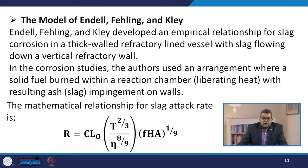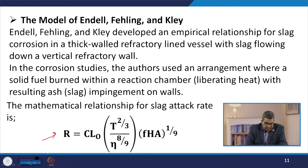Another model is that of Endel, Fehling and Klee, who developed an empirical relationship for slag corrosion in a thick-walled refractory lined vessel with slag flowing down a vertical refractory wall. In corrosion studies, the authors used an arrangement where solid fuel burned within a reaction chamber, liberating heat with resulting ash or slag impingement on walls. The mathematical relationship for slag attack is: r = C × l0 × t^(2/3) / (eta^(8/9) × FHA^(1/9)).